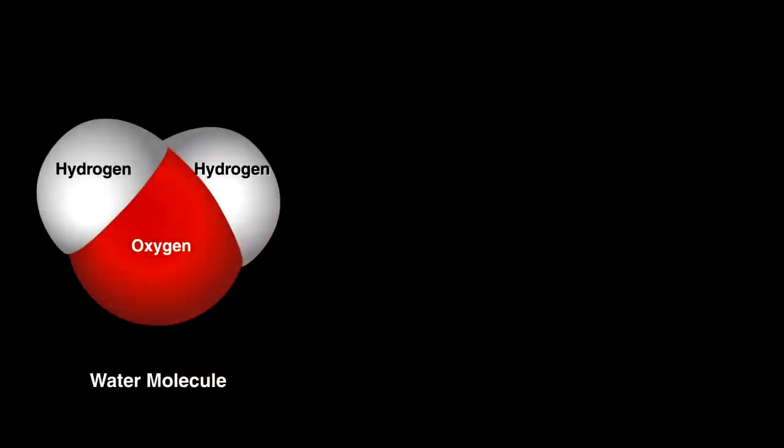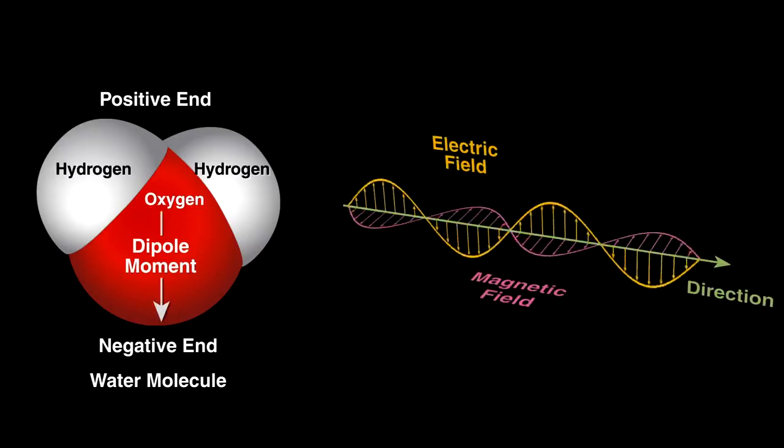Our food is filled with water, which is positively charged at one end and negative at the other. To give these molecules more energy, we expose it to electromagnetic waves that emanate from the tube.